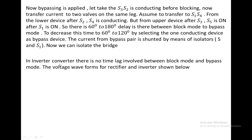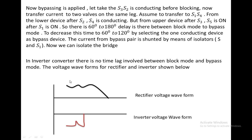In the case of an inverter converter, there is no time lag between blocking mode and bypass mode. The voltage waveforms of rectifier and inverter modes are shown below. For the rectifier, after initiating blocking, the current comes to zero with some delay. But in the case of the inverter, after initiating blocking mode, the voltage directly comes to zero. This is the difference in de-energization between the rectifier converter and the inverter converter.